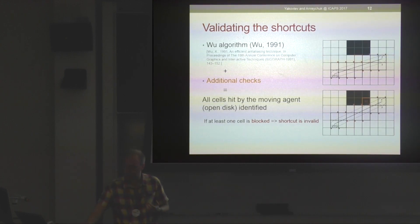How do we validate the shortcuts? Basically, we identify all the cells that lie on the straight line segment connecting the endpoints of the move. We use this Bresenham algorithm from the computer graphics community. We modified it and enhanced it a bit so it suits our needs. In the end, we get all the cells that are in contact with the agent, and then we just check if they're all traversable. If they are, like on the picture on top of the slide, then the shortcut move is feasible.